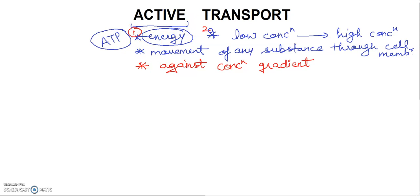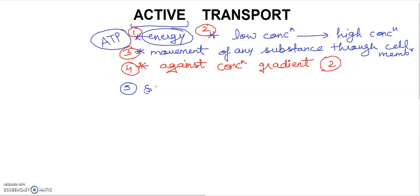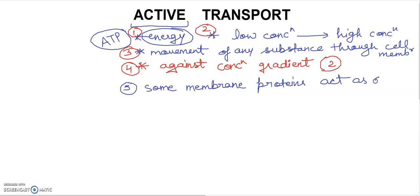So to summarize the key points: first point, second point, third point, and fourth point. Movement is against the concentration gradient — from low concentration to high concentration. The fifth point is that some membrane proteins are required. These membrane proteins act as carrier molecules.